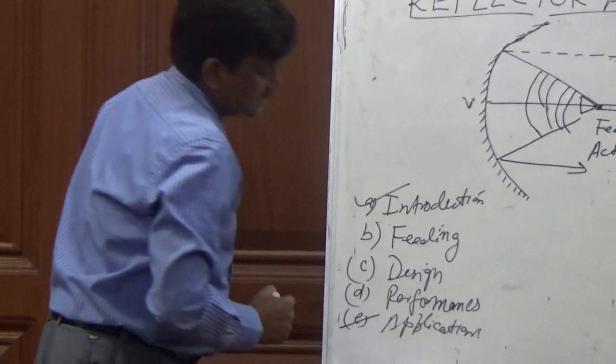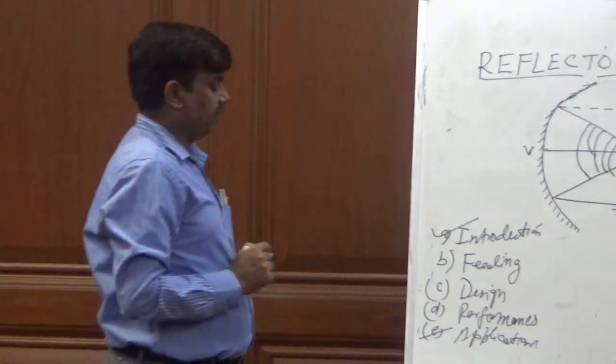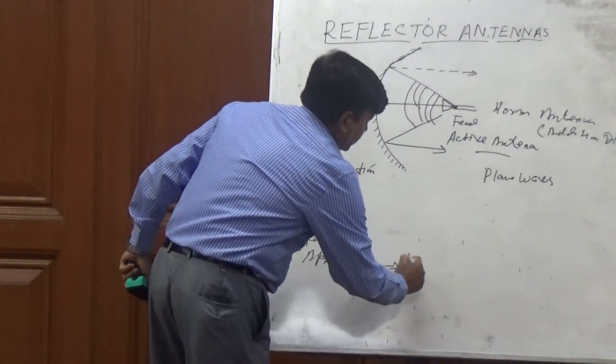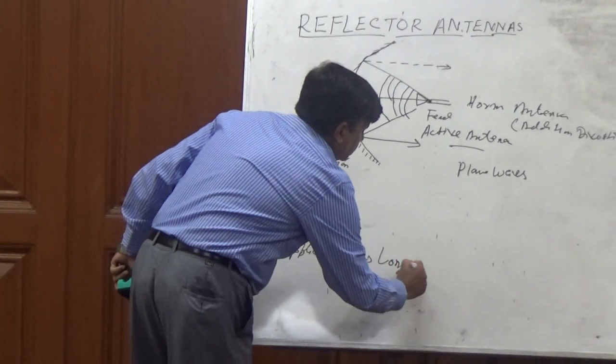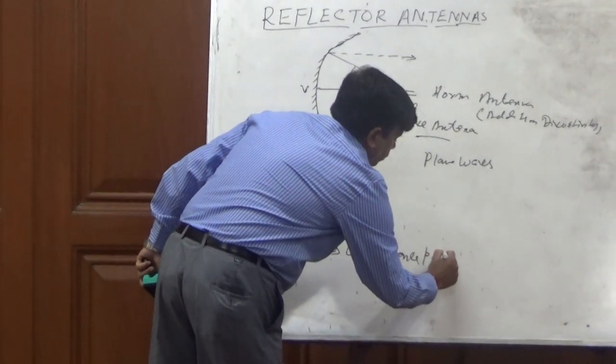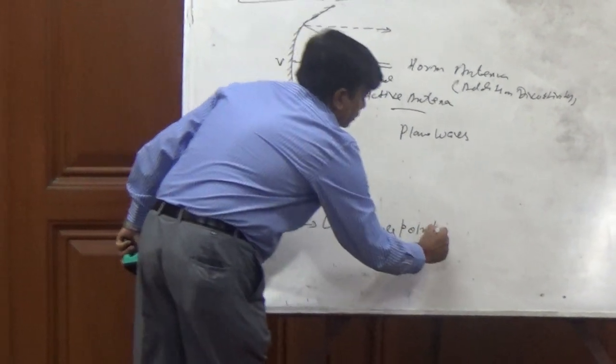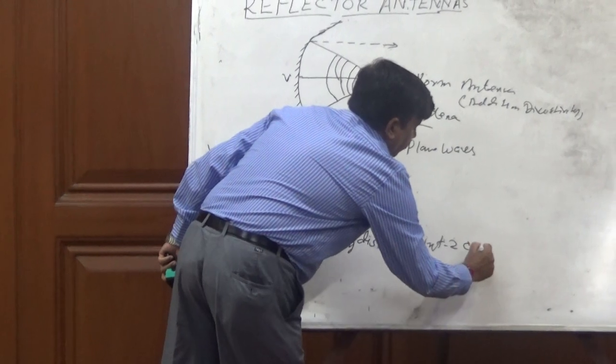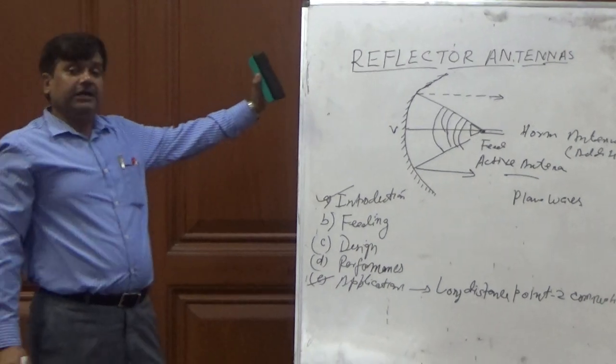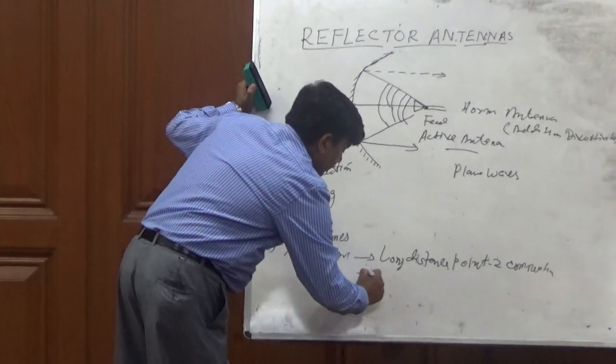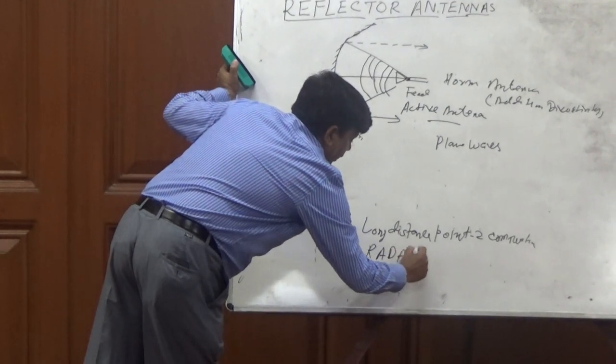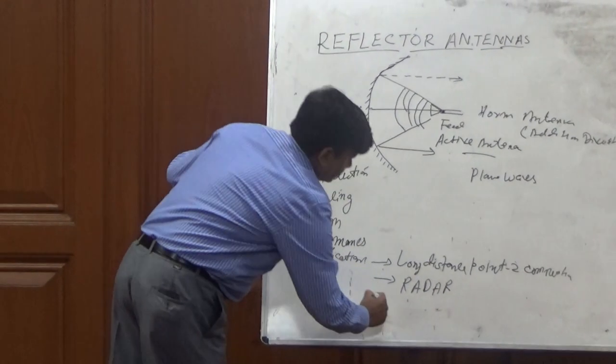In applications, because of this directivity, high directivity, this antenna is mostly using long distance point to point communication. In addition, because of this property, this antenna is also using radar and also even our TV receiver.